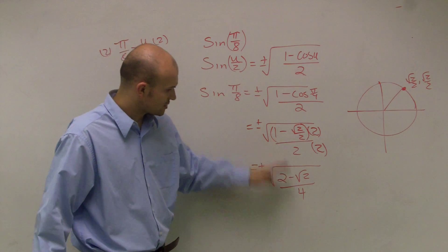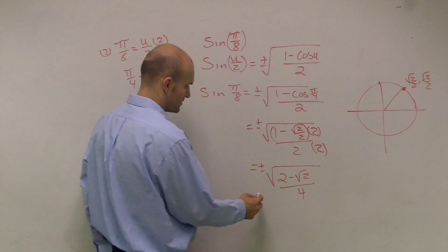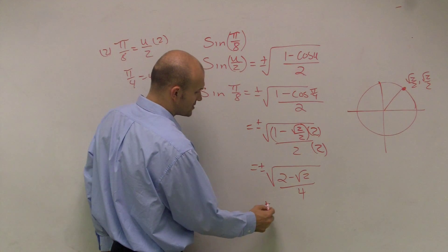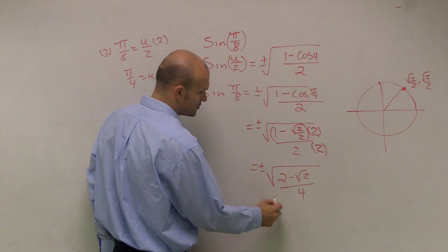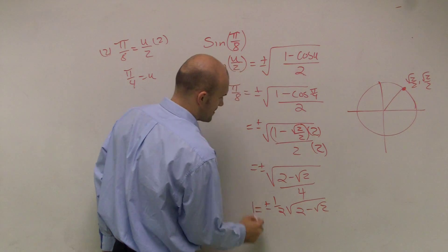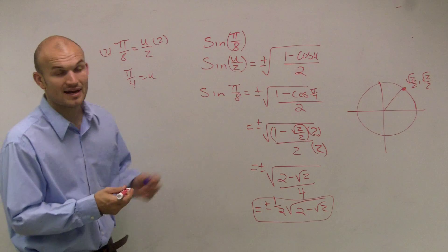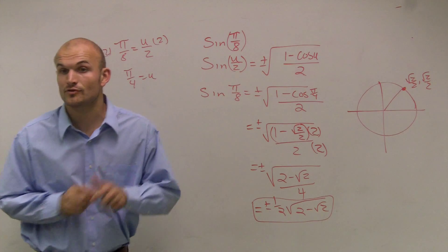Then what I can do is, this is the square root of everything, I can take the square root of my denominator. So that's going to equal plus or minus, the square root of 4 is 2, so I'll have 1 half times 2 minus radical 2. And there you go, that's your answer for the half angle of sine of pi over 8.